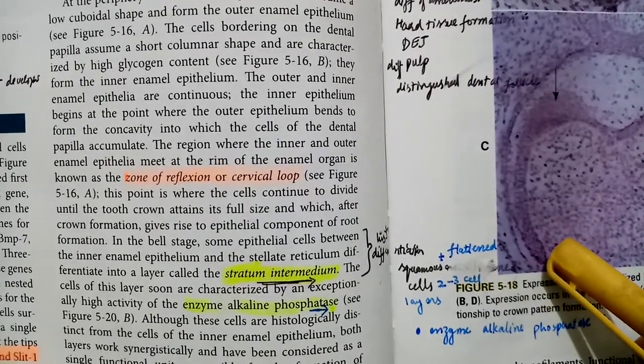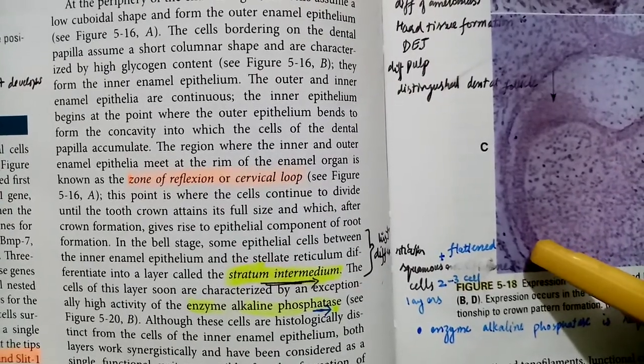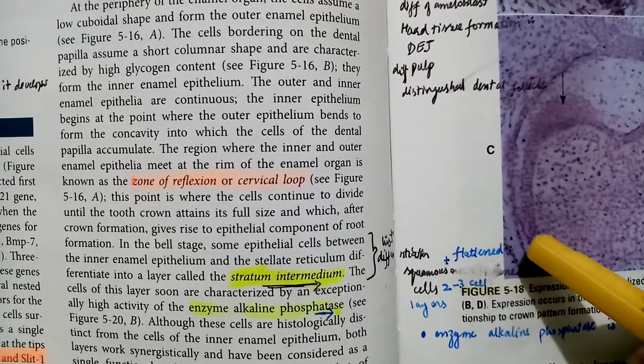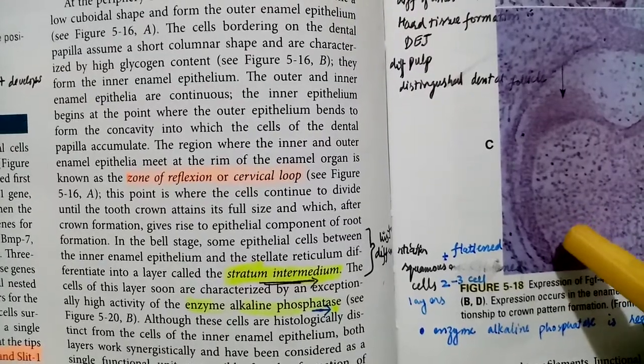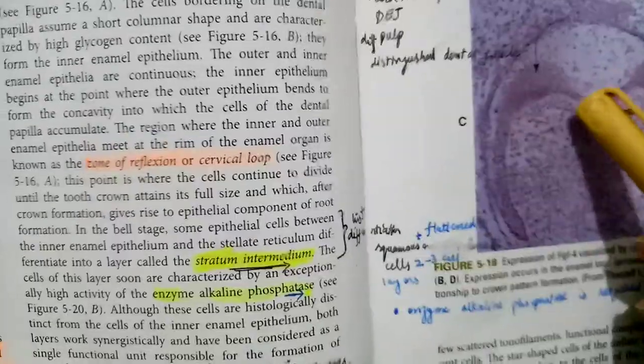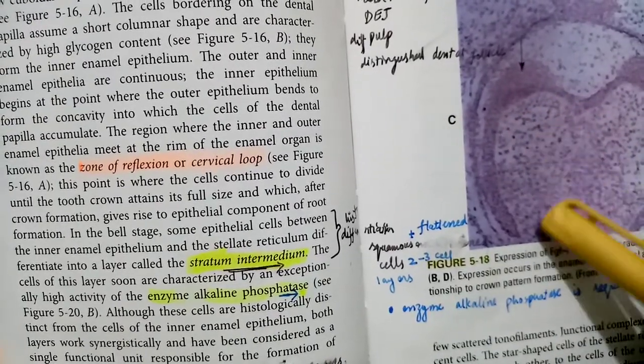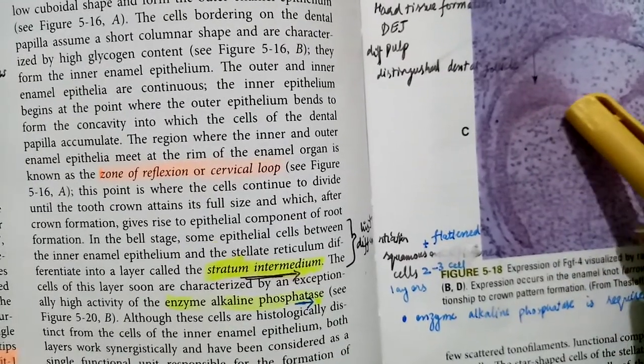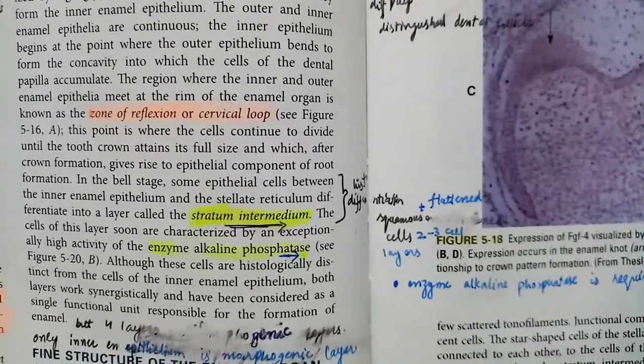The inner epithelium begins at that point where the outer epithelium bends. The inner epithelium meets at the rim of the enamel organ. The inner enamel epithelium and outer enamel epithelium meet at the rim of the enamel organ.